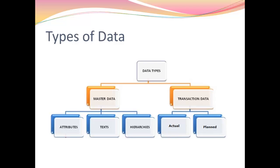First we will learn what are the different types of data. Primarily there are two types of data: master data and transaction data. Master data is further subdivided into three types - attribute, text, and hierarchy - whereas transaction data is divided into actual type of data and plan type of data.